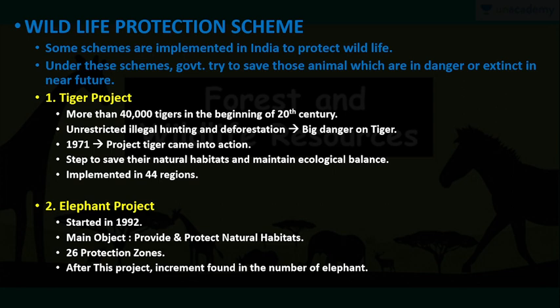These are some schemes run by our state and central government of India to save animals that are in danger. The first is the Tiger Project. In the 20th century, we had 40,000 or more tigers at the beginning, but due to unrestricted illegal hunting and deforestation, tigers came to an end. This project was implemented in 1971 to save their natural habitats and maintain their ecological balance. Right now it is implemented in 44 regions of India.